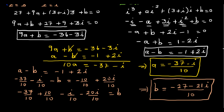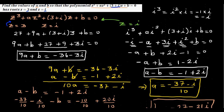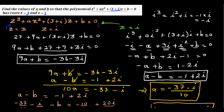This is a tricky question, but once you aren't sidetracked by the conjugate root theorem, it's straightforward: substitute z = 3 and z = i and solve for a and b.